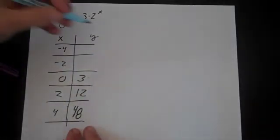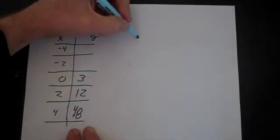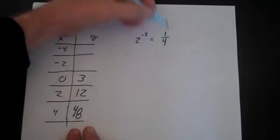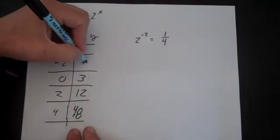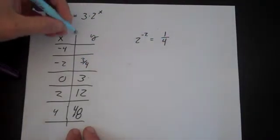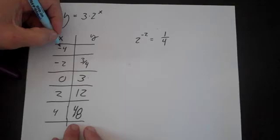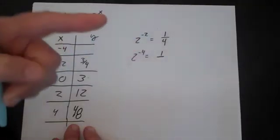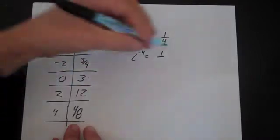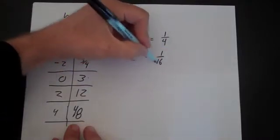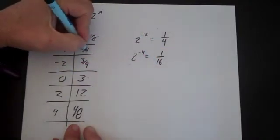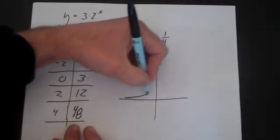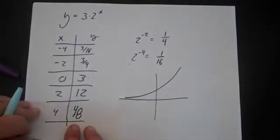Going in the negative direction: at x equals -2, 2 to the -2 equals 1 over 2 squared, or one-fourth, so y equals 3/4. At x equals -4, 2 to the -4 is 1/16, so y equals 3/16. So you get a graph that roughly looks like the exponential growth shape we saw before.